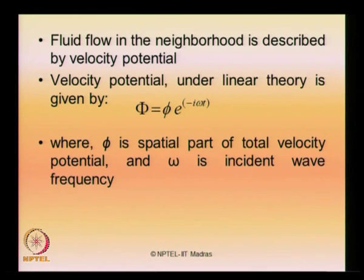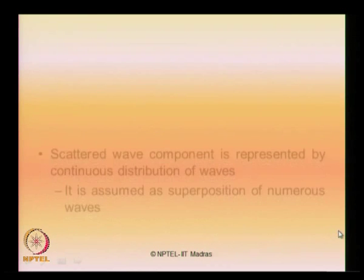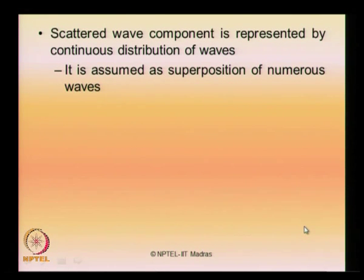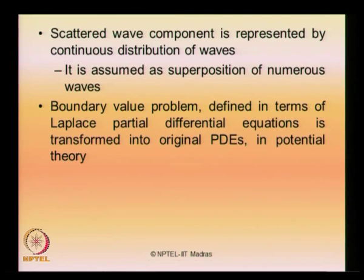In this case, phi denotes the spatial part of the total velocity potential, where omega is the incident wave frequency. The total potential is therefore a sum of the potential of the incident wave and the scattered wave components applied on a given member interfering with the flow field. The scattered wave component is represented by a continuous distribution of waves — a superposition of numerous waves acting one over the other. The boundary value problem defined in terms of the Laplace partial differential equation is transformed in the original partial differential equation in the potential theory. That is how the wave structure interaction is handled in numerical analysis.